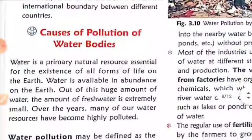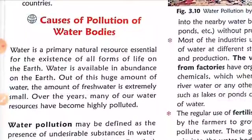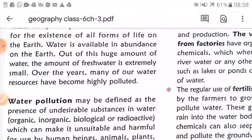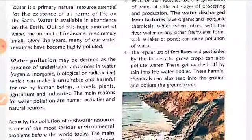Now let's look at the causes of pollution of water bodies. Our rivers have become polluted, but why? Water is primarily a natural resource essential for all forms of life on earth, but the amount of fresh water is extremely small. Water pollution may be defined as the presence of undesirable substances in water — organic, inorganic, biological, or radioactive — which make it unsuitable and harmful for use by human beings, animals, plants, agriculture, and industries.